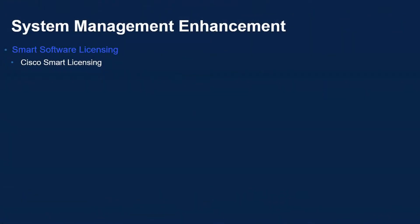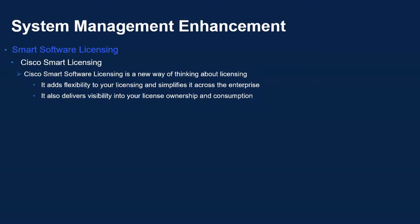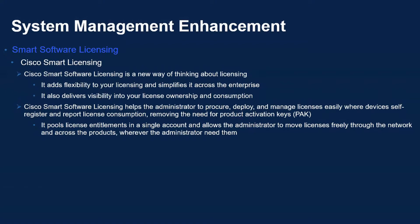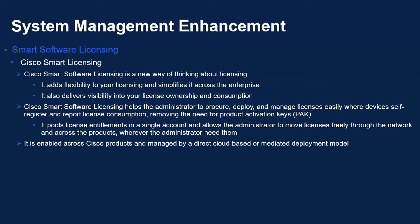Let's dive into the system management enhancement called Cisco Smart Licensing. Cisco Smart Licensing is a new way of thinking about licensing. It adds flexibility to your licensing and simplifies it across the enterprise. It also delivers visibility into your license ownership and consumption. Cisco Smart Licensing helps the administrator to procure, deploy, and manage licenses easily where devices self-register and report license consumption, removing the need for product activation keys, or PAC. It pools license entitlement in a single account and allows the administrator to move licenses freely through the network and across products wherever needed.